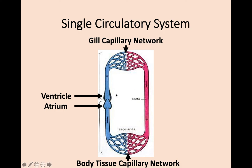In the fish system, deoxygenated blood that has delivered its oxygen to body tissues enters the atrium, then goes into the ventricle and is pumped at high pressure to the gills. At the gill capillary network, oxygen is gained from the water, and at lower pressure this oxygenated blood travels through the basic aorta to body tissue capillaries. It's still delivering oxygen, but it's nowhere near as effective at doing so, which is why fish cannot maintain high metabolic rates.